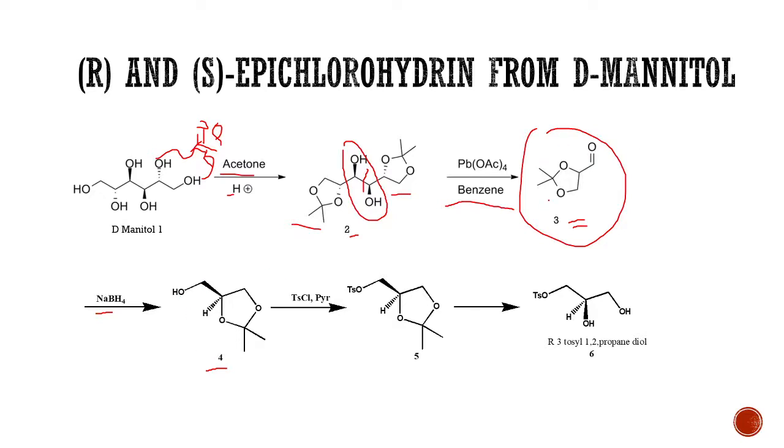As we reduce this aldehyde to alcohol, this alcohol is then protected with tosyl chloride and OH is converted to OTs. This is a simple reaction carried out in presence of pyridine.